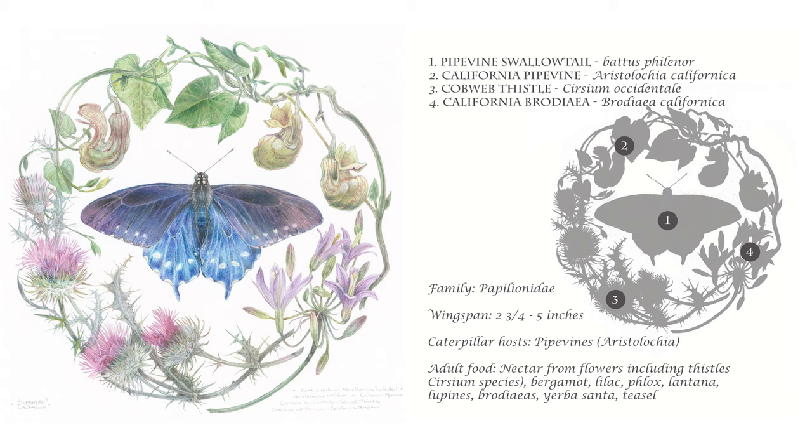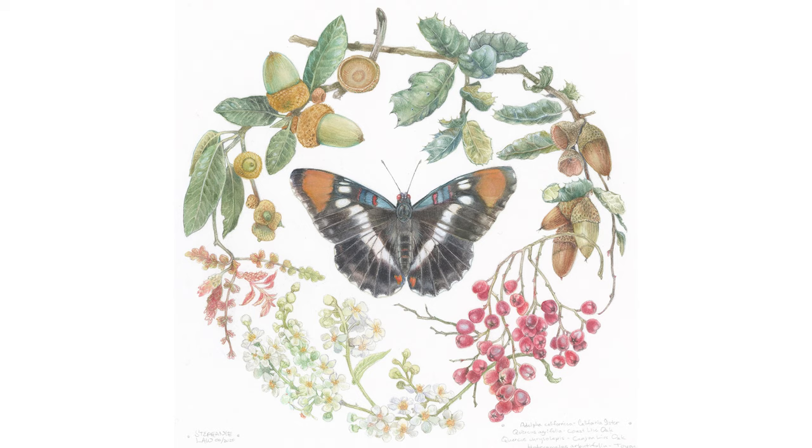I've been working on a new series of paintings recently. It is a botanical series that features butterflies alongside their host plants and nectar plants. This for example is the blue pipevine swallowtail, and these are the pipevine that the caterpillars rely upon as well as some of the nectar plants that the adult butterfly needs to survive. And here's another one of the pieces in the series — this is the California sister butterfly.